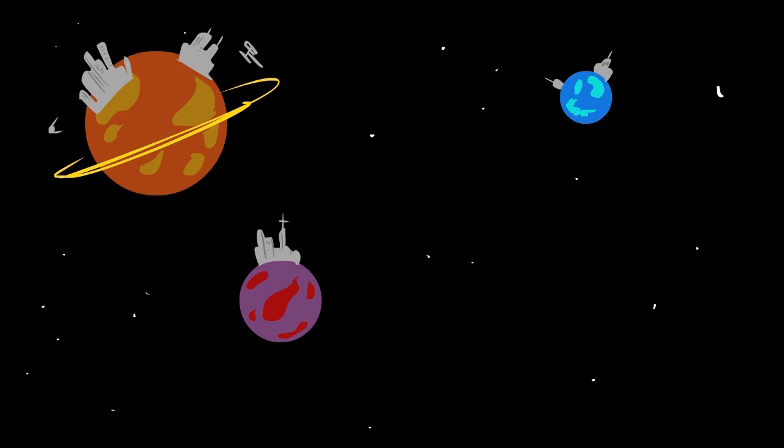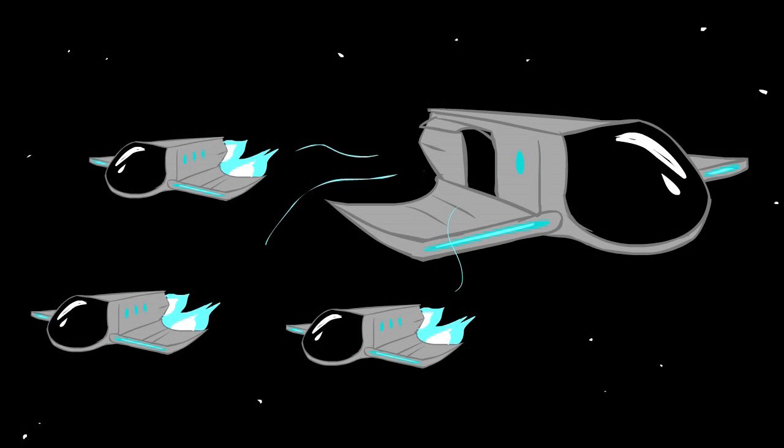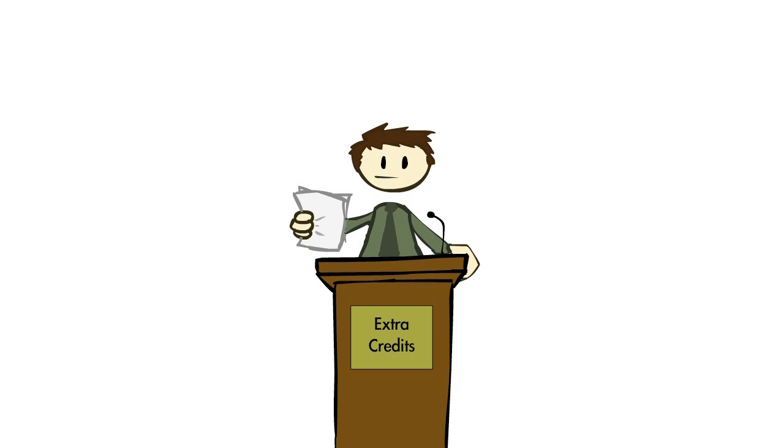If those civilizations colonized their home system and then sent out colony ships at even remarkably slow speeds, and each of those colonies sent out ships even every thousand years, they'd colonize the entire universe in less than a billion years. Here's how the math works out.